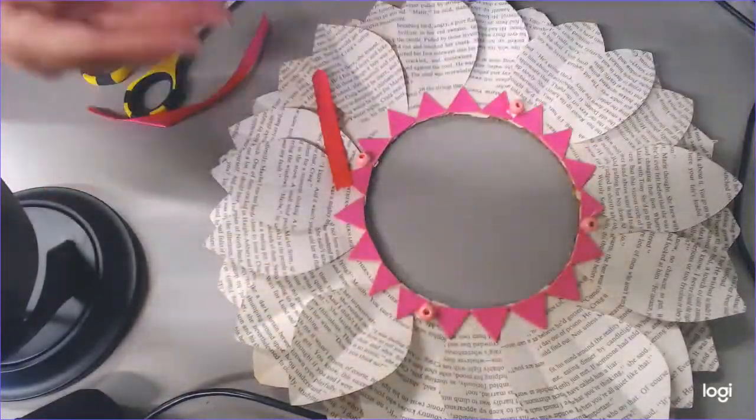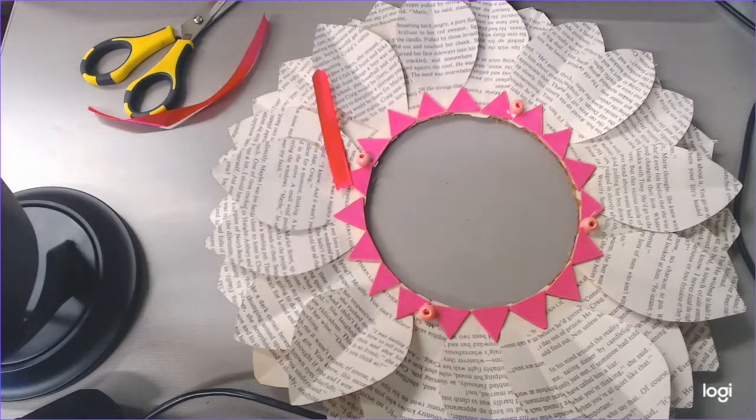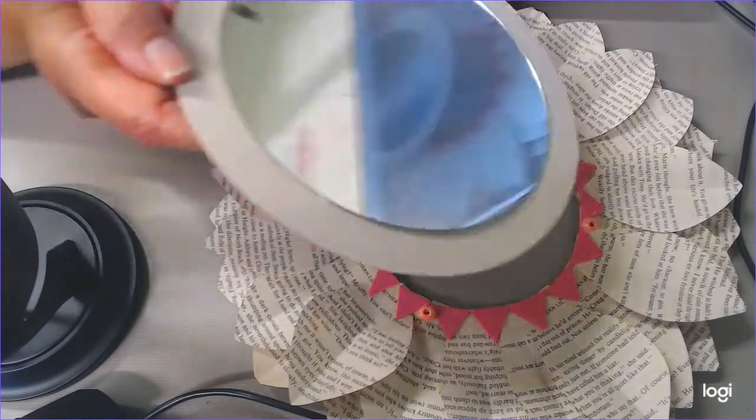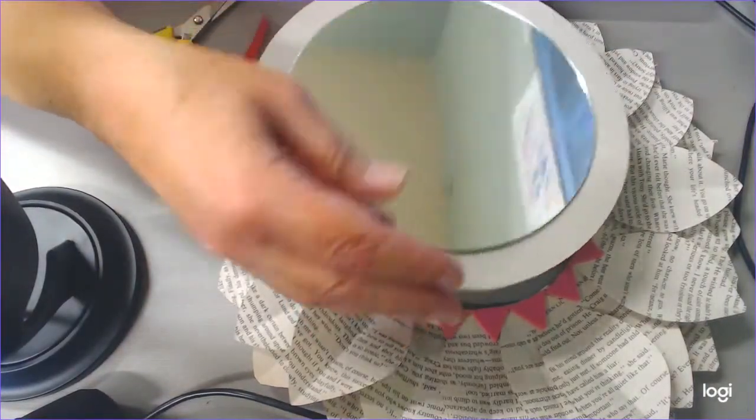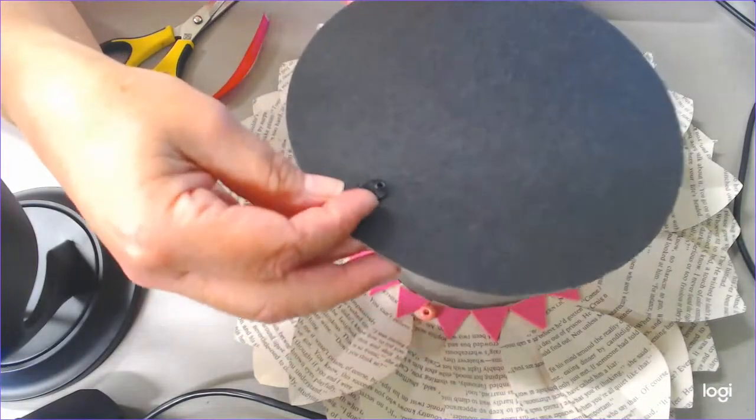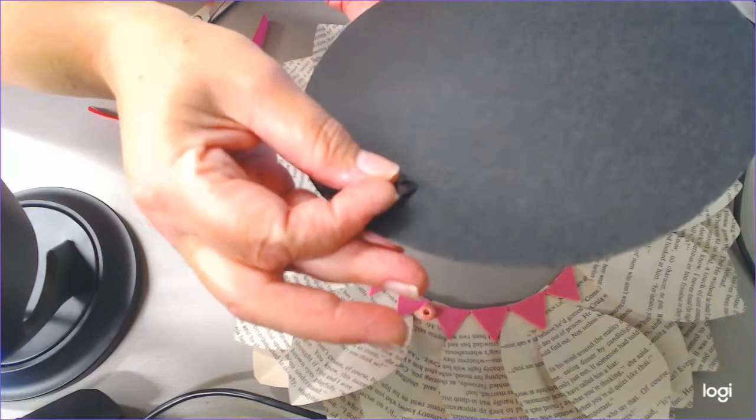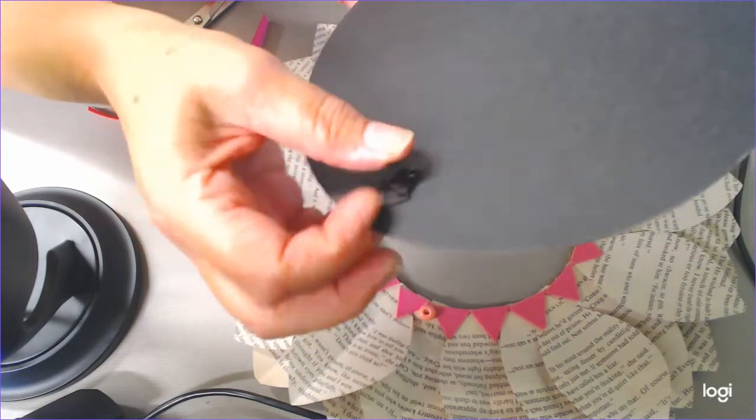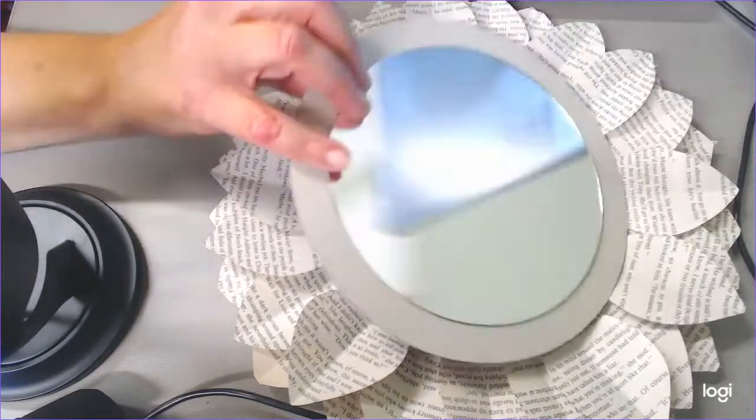Then what you're going to do—it depends if you want to get a mirror from the dollar store. I just took off the top of the frame. This is the back. The back has a hook, so you wouldn't actually have to add a hook if you wanted to put the mirror.